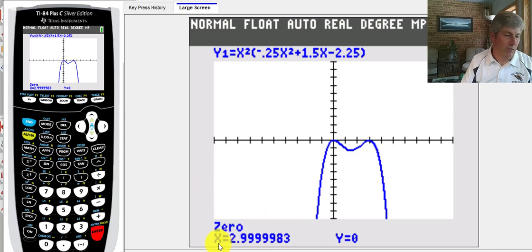So our zeros are at and that is a double root. So that's going to be x equals three twice. Now to find the relative max and min. We don't need to search for the relative max. We know that the relative maxes here are at the zeros. So the only thing we need to find is the relative min.